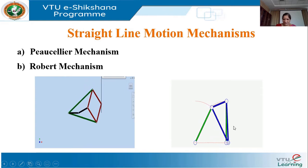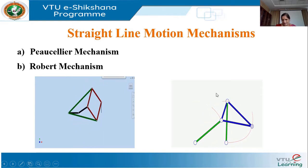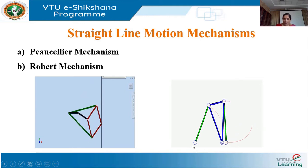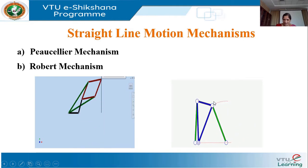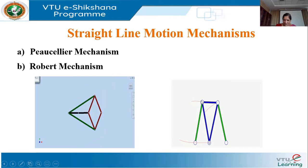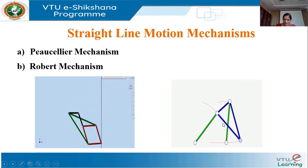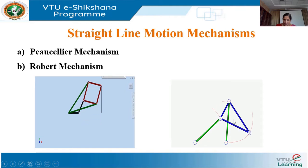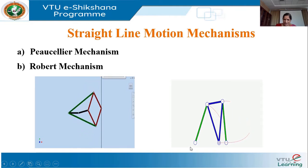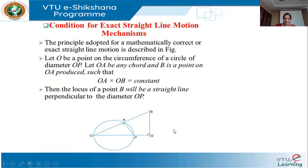The Peaucellier mechanism is an exact straight line motion mechanism, and the Roberts mechanism is an approximate straight line motion mechanism. In the animation of the Roberts mechanism, there is one single link, and all four links have equal length.